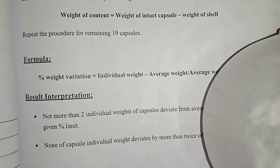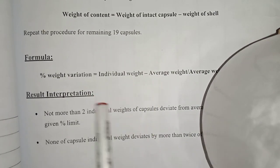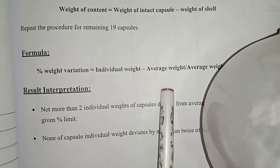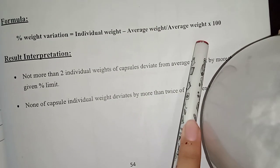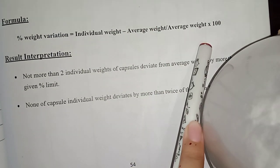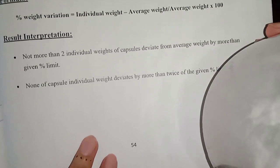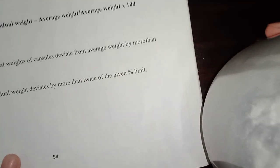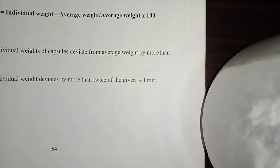To find the percentage weight variation, use the formula: individual weight minus average weight, divided by average weight, multiplied by 100. This is the same formula we used in the tablet weight variation test.